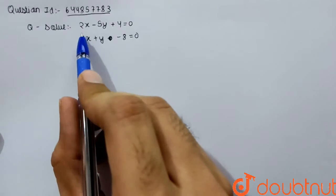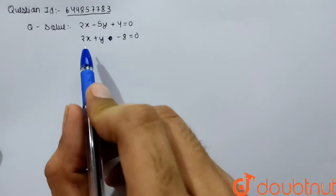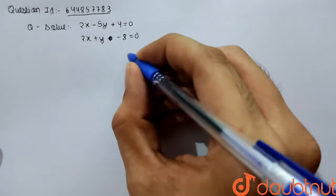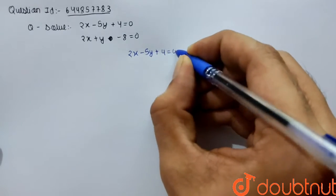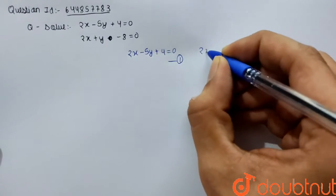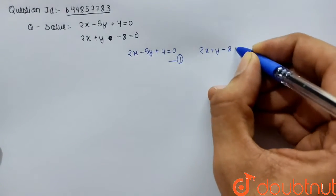The given question is: solve 2x minus 5y plus 4 equals 0, and 2x plus y minus 8 equals 0. So we have equation 2x minus 5y plus 4 equals 0 and 2x plus y minus 8 equals 0.